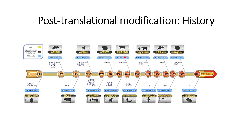In 1982, farnesylation was identified. Then in 1988 different glycosylation types were discovered, and in 1992 O-glycosylation was identified. O-glycosylation mainly occurs in the Golgi apparatus. N-glycosylation begins in the endoplasmic reticulum and is further modified in the Golgi, whereas O-glycosylation starts and is completed within different sections of the Golgi apparatus.